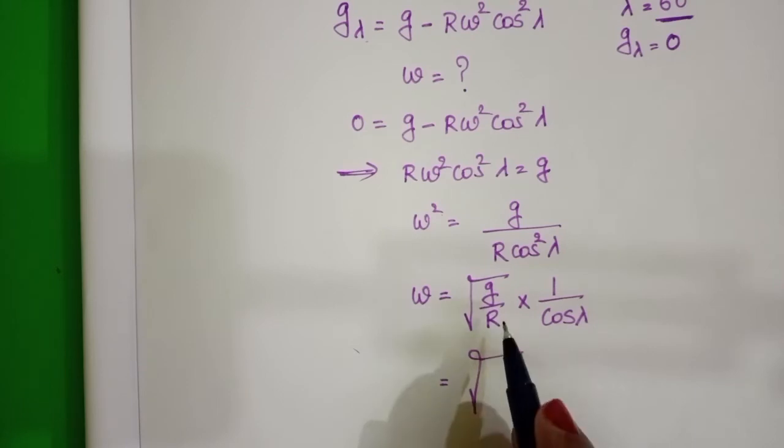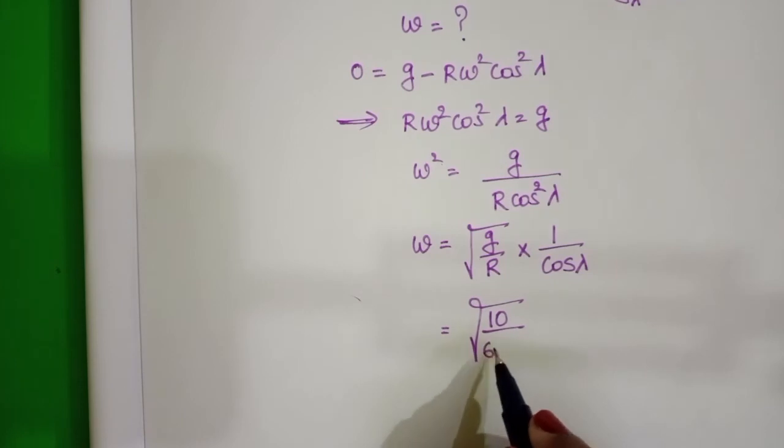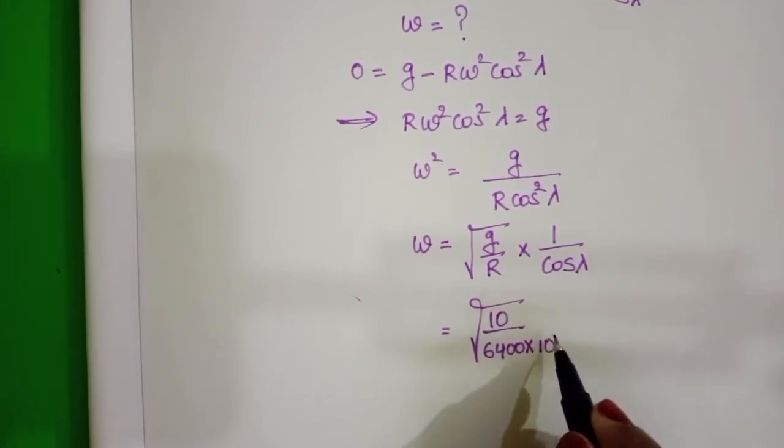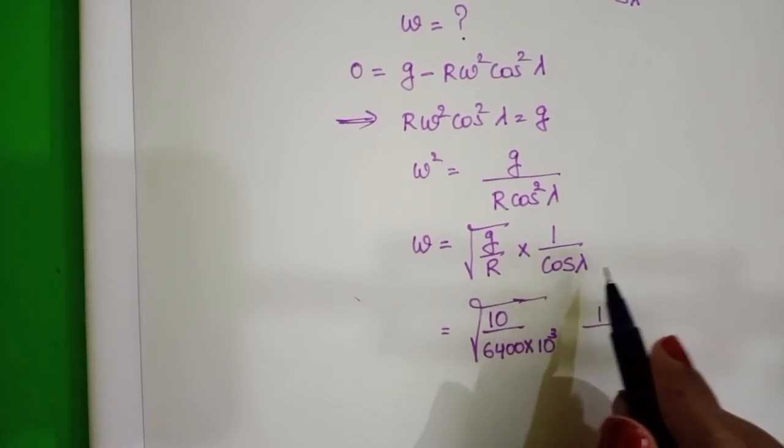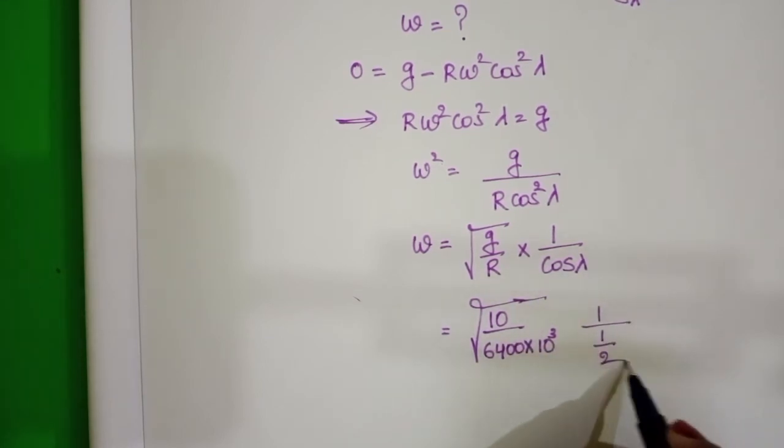Take g value 10 meter per second square, and radius of the earth is 6400 km. In place of km, take 10 power 3. 1 by cos 60 degrees value is 1 by 2.